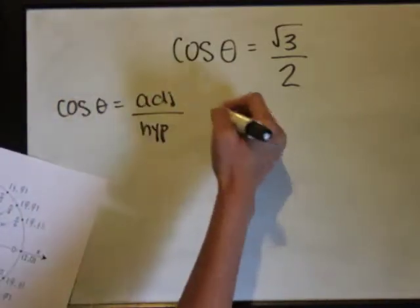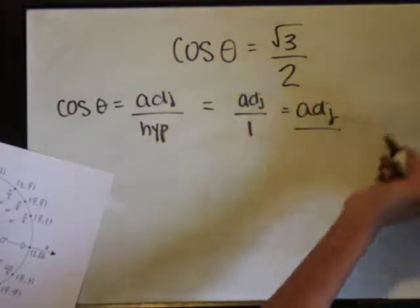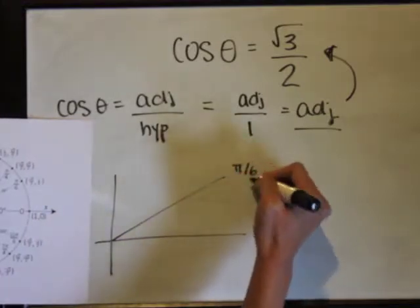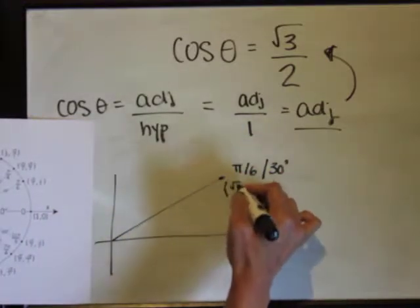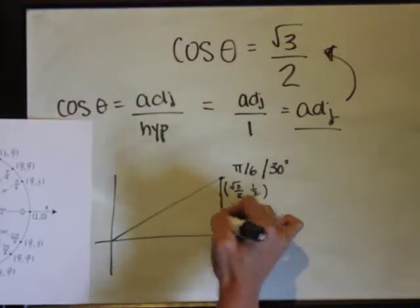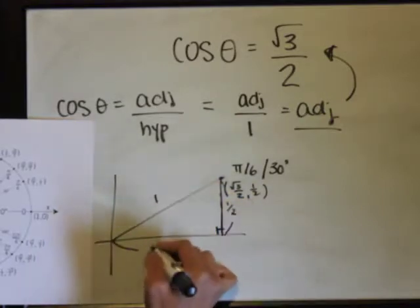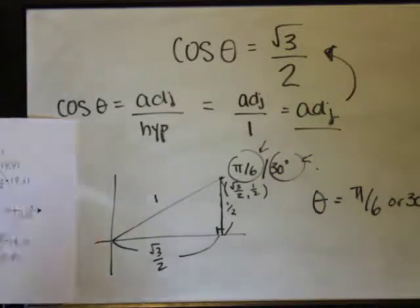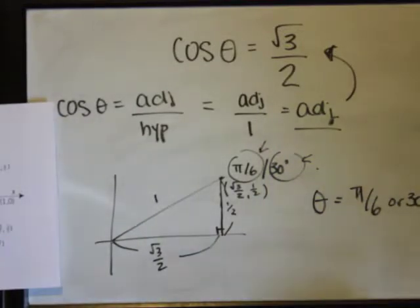Cosine θ is adjacent over hypotenuse, and on the unit circle we know the hypotenuse always equals 1. So √3/2 represents the adjacent—we're looking for that x-coordinate on the unit circle. We find it in quadrant 1, where x = √3/2 when the angle is π/6 or 30°.